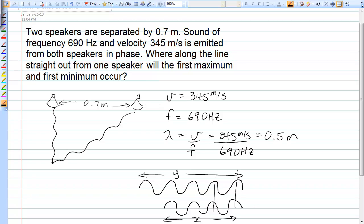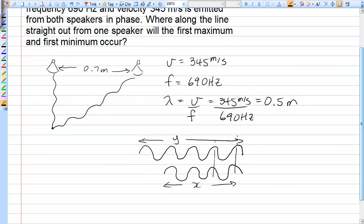the difference in their path lengths has to be exactly one wavelength. So if this, that's called the path difference, is exactly one wavelength, or any integer multiple, one wavelength, two wavelengths, three wavelengths, then this will be a maximum.